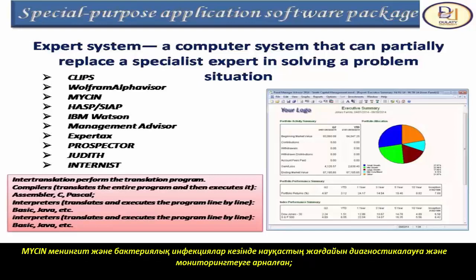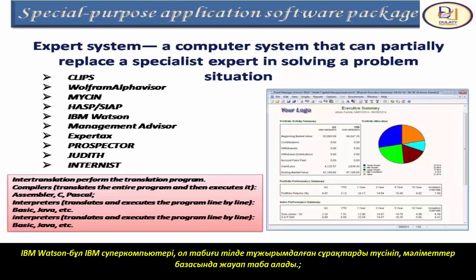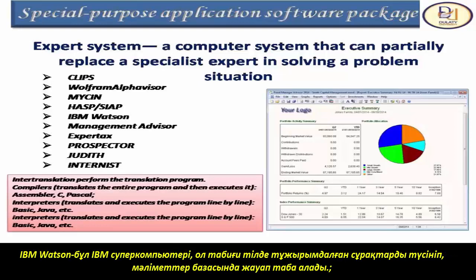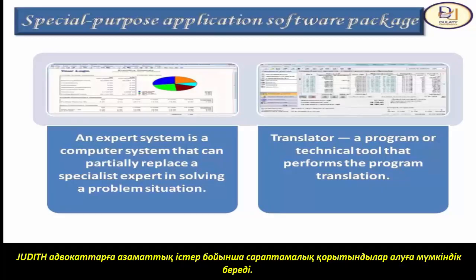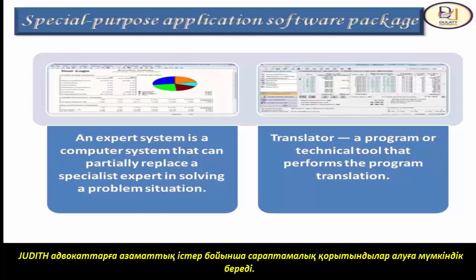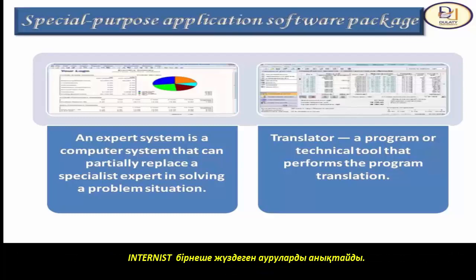MYCIN is designed for diagnostic and monitoring of patient condition in meningitis and bacterial infection. NAVLAB is an interpretive system that determines the location and types of ships in the Pacific Ocean based on an acoustic tracking system. IBM Watson is a supercomputer that can understand questions formulated in natural language and find answers in a database. Other expert systems include: Management Advisor (business planning), Prospector (mineral search), Duties (civil legal opinions), and Internist (diagnoses hundreds of diseases).